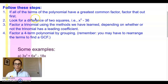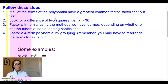The first thing you want to look for is a greatest common factor of all the terms of the polynomial that you can pull out. That is the first thing you want to check and the first thing you're going to do when you're factoring. There might not be a greatest common factor of all the terms, but that's the first thing to check.